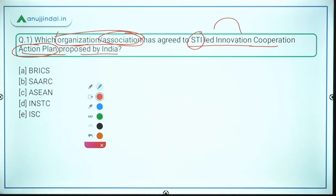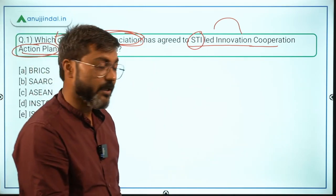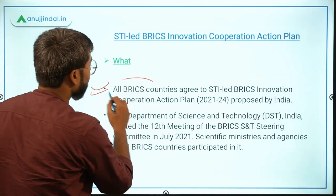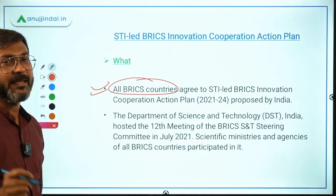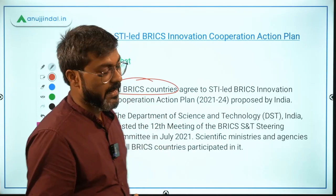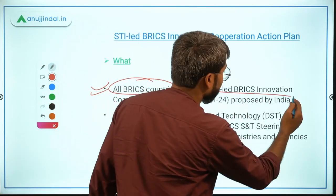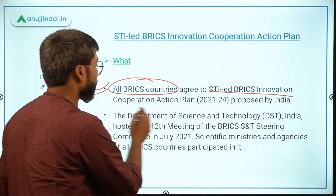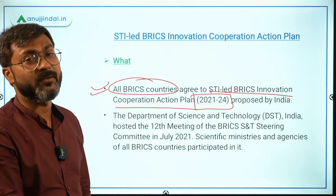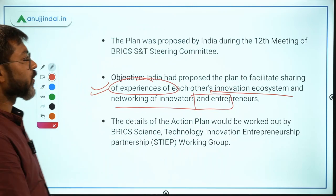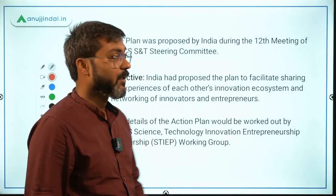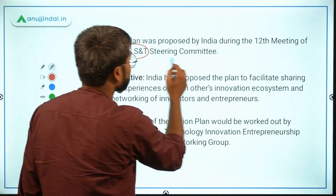All BRICS countries have agreed to accept India's proposed plan. The plan is the STI-led BRICS Innovation Cooperation Action Plan, running from 2021 to 2024. Also remember that this plan was proposed by India during the recently held 12th meeting of the BRICS Science and Technology Steering Committee.